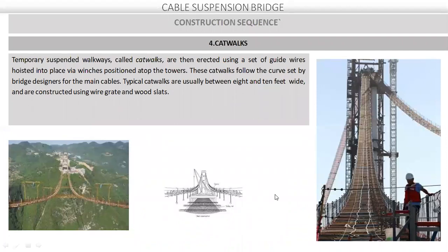Next is the catwalk — a temporary suspended walkway. When we do temporary construction, we move our rope levels so that spinning and other work will be easier. The catwalk is generally 8 to 10 feet wide.